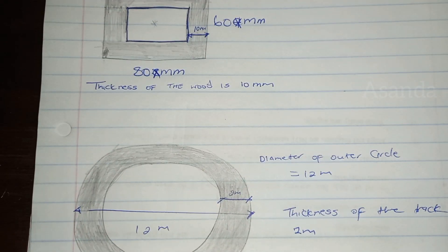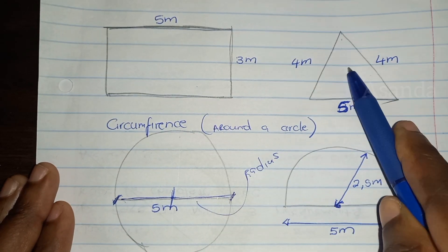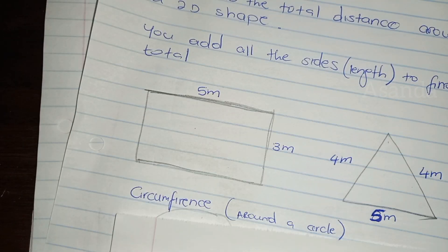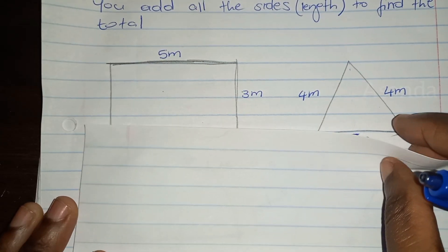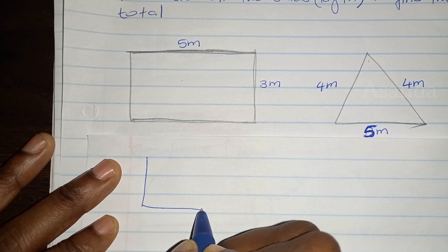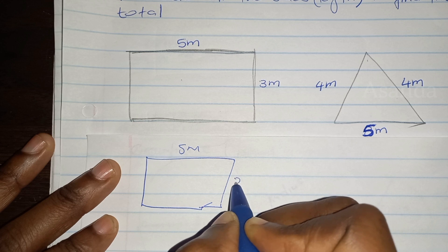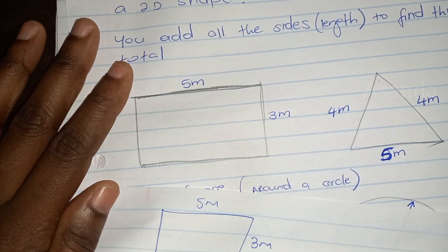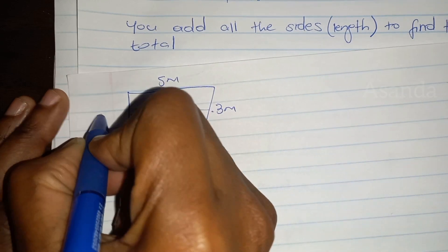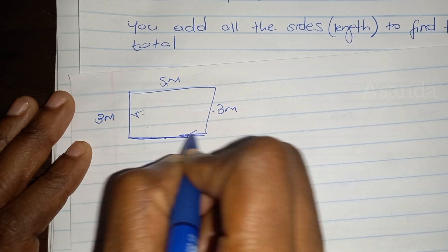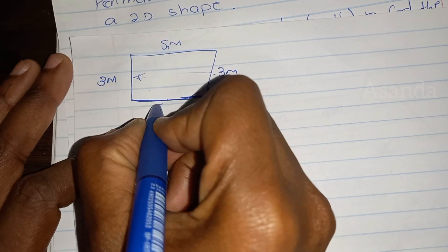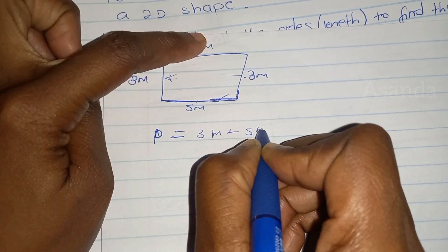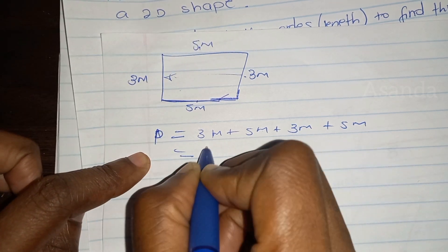Let's calculate the perimeter for the first three shapes: the rectangle, the triangle, and the circle. For this rectangle, that's five meters and that's three meters. We're not given the other two sides, but since it's a rectangle, the opposite sides are equal. So the other width is three meters and the other length is five meters. Perimeter equals three plus five plus three plus five, which is 16 meters.